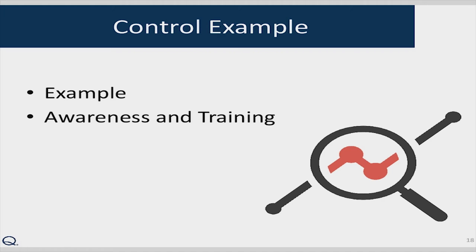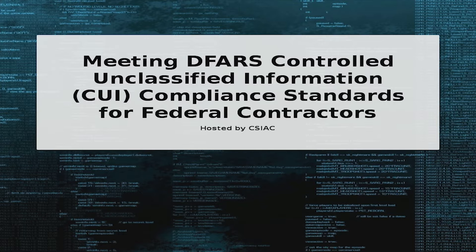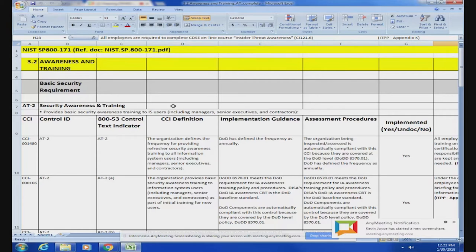Let me go through an example of one of our controls. I'm going to share my screen. This is one of the control families — the awareness and training family. At the top you can see the basic security requirement, AT-2, security awareness and training.